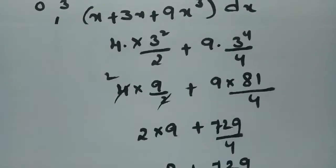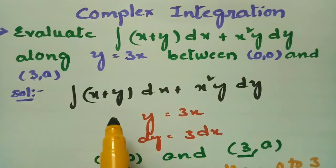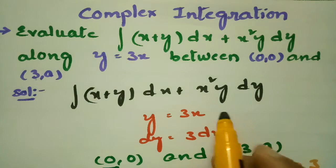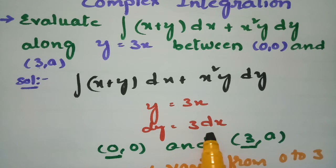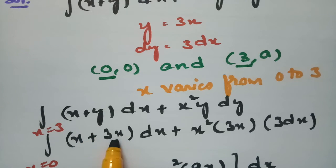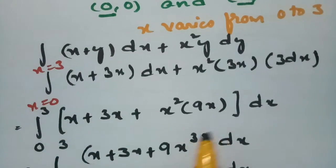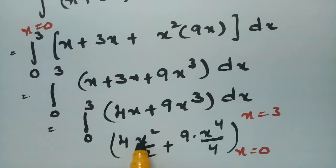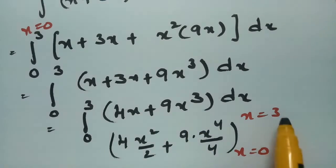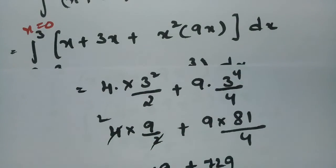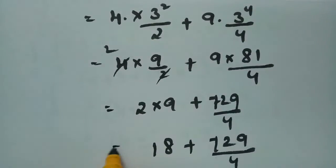To recap: the integral is (x + y)dx + x²y dy. We transform the line integral in terms of x. Since y = 3x, dy = 3dx, and the points go from (0,0) to (3,9), x varies from 0 to 3. Substituting y = 3x and dy = 3dx gives 4x + 9x³. Integrating: x²/2 for x and x⁴/4 for x³, then substituting the upper limit x = 3.